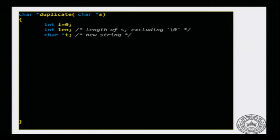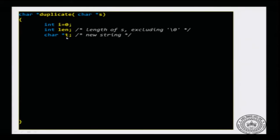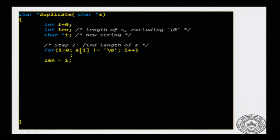I do not want to count the null character in the length. The typical convention is that when you mention the length of a string you do not count the null character. I will also declare a char *t. The code proceeds in stages — first I have to write a loop to find the length of the string. I can say: for i equal to 0, as long as s[i] is not null, increment i. As soon as I see the first null in s I will stop. When I exit out of the loop, i will be the number of non-null characters in s, so I set len equal to i.